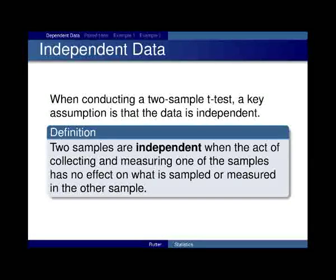So, when you do a two-sample t-test, one of the assumptions we have is that you have independent data. And really what independent data means is that whenever you measure or collect one of the samples, it really has no effect on what you get in the second sample or how you measure the second sample. They're two independent entities.